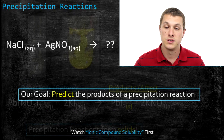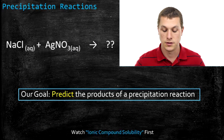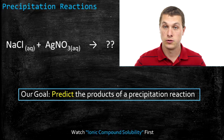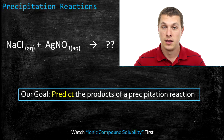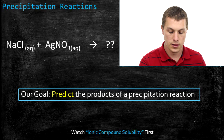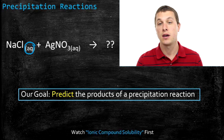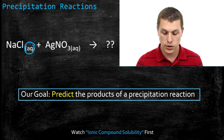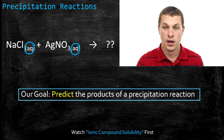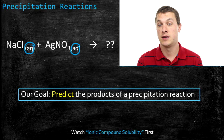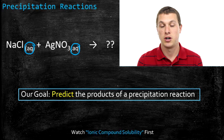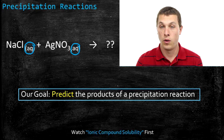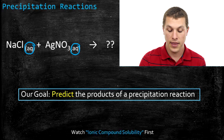Our goal in this video is to predict the products of a precipitation reaction. We'll look at combining two chemical species that are aqueous and try to figure out what compounds form when they're mixed — is there a solid? The reason sodium chloride and the other chemicals were listed as aqueous is because they're soluble. What we're really looking for is whether we get something insoluble, or a solid. You need to be comfortable using solubility tables. If you're not sure how, check out my video on ionic compound solubility.